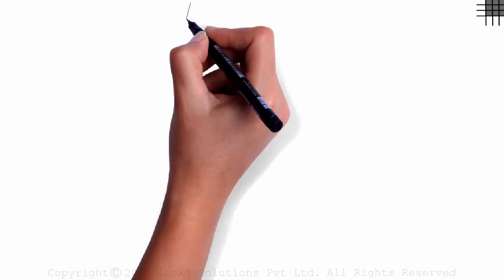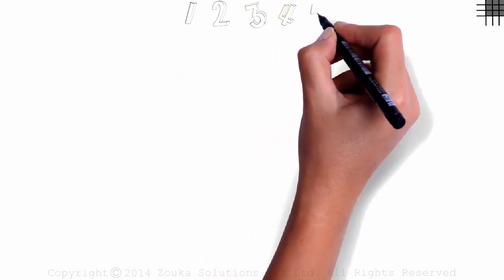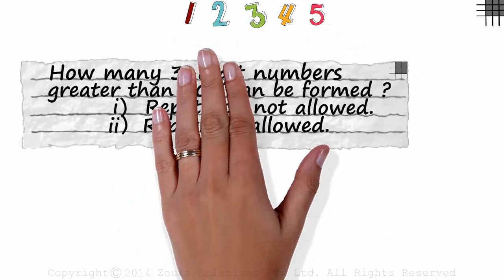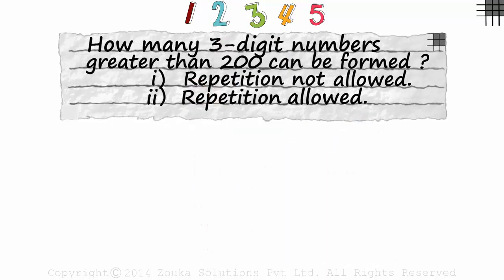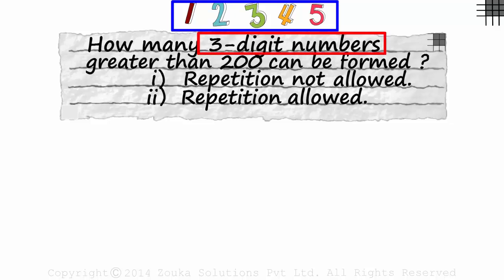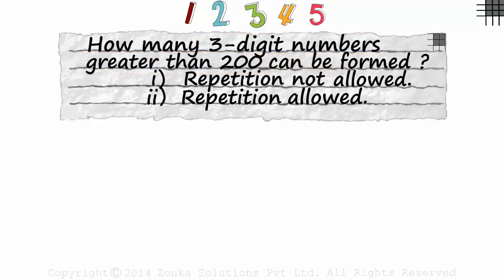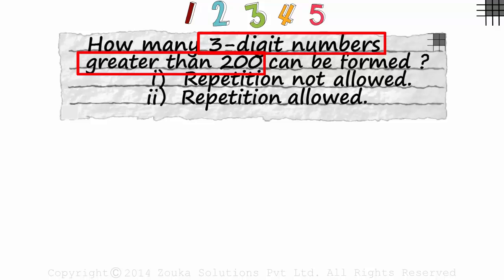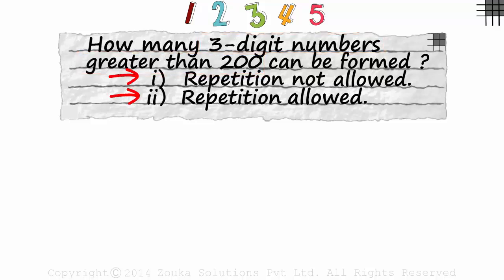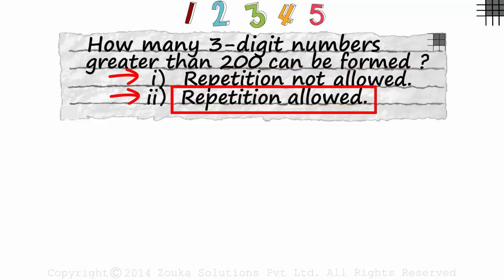Just like what we have seen in the previous sessions, we play with these five digits. Here's our question — using these five digits, how many three-digit numbers greater than 200 can be formed? Three-digit numbers greater than 200. And again we have two cases: when repetition is not allowed, and when it's allowed.